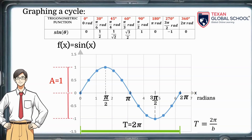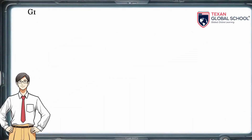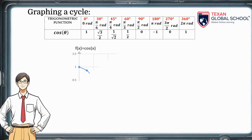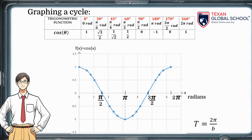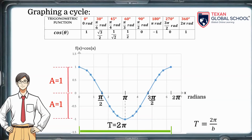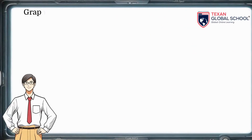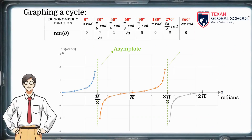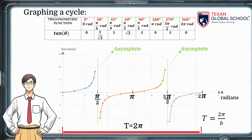Again we present the sine function, the cosine function, and the tangent function. We can see that the sine function is the same as the cosine function with an amplitude of 1, but shifted by 90 degrees or half pi radians. The tangent function has asymptotes, so it tends to infinity.